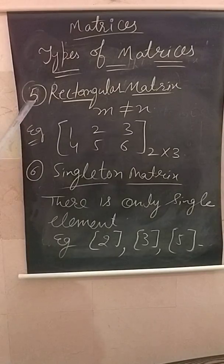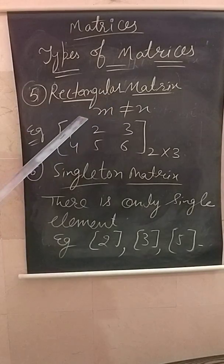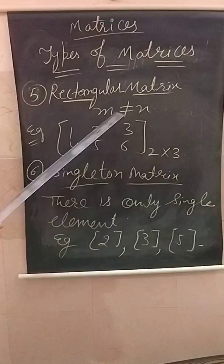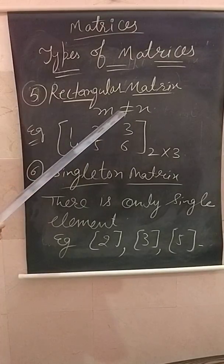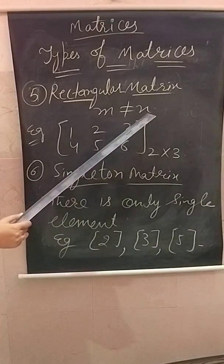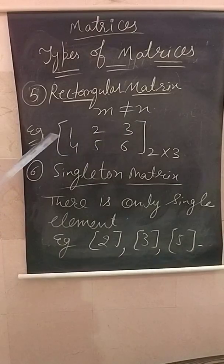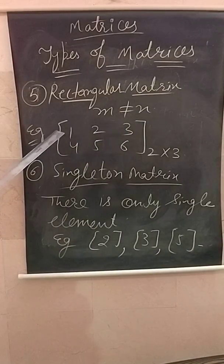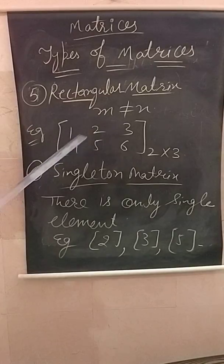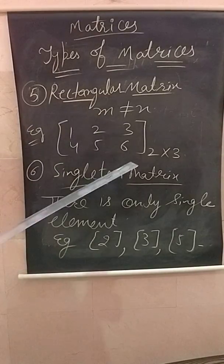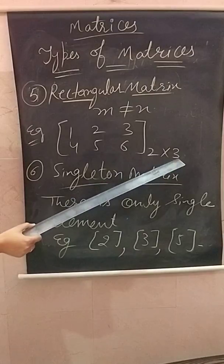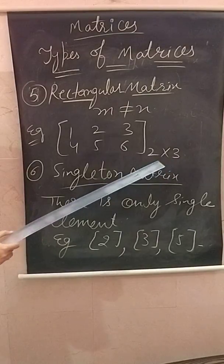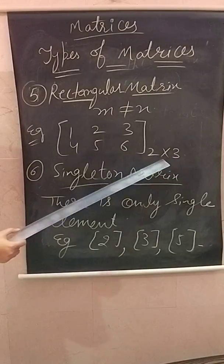Next is the rectangular matrix. In a rectangular matrix, m is not equal to n, meaning the number of rows is not equal to the number of columns. For example, a matrix with two rows and three columns has m equal to two and n equal to three, so m is not equal to n.